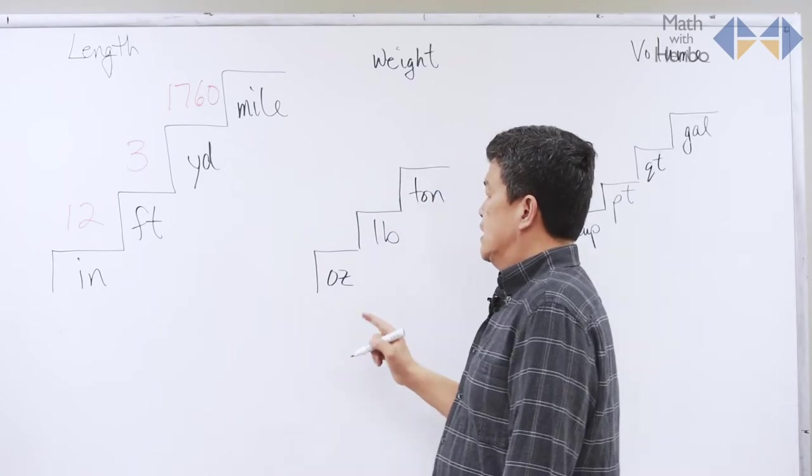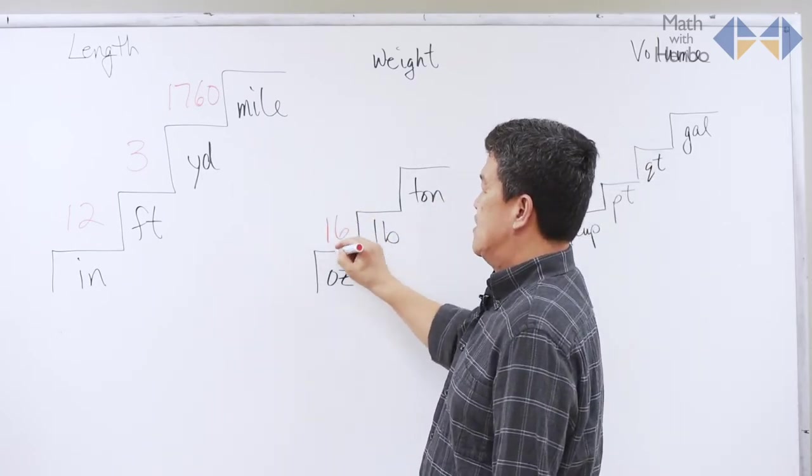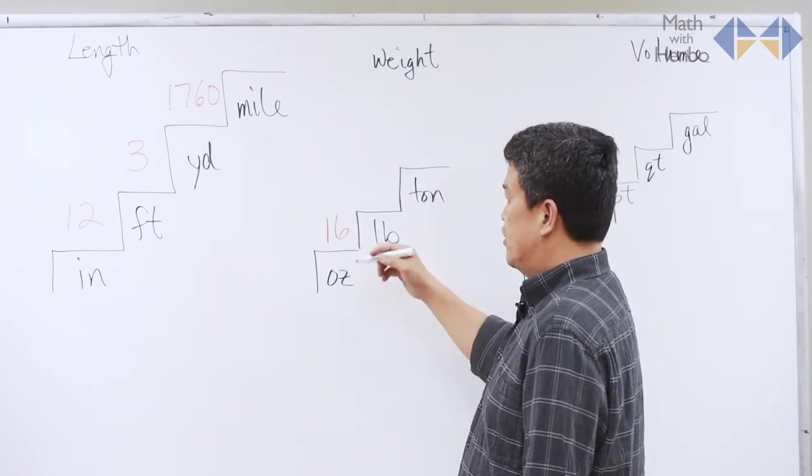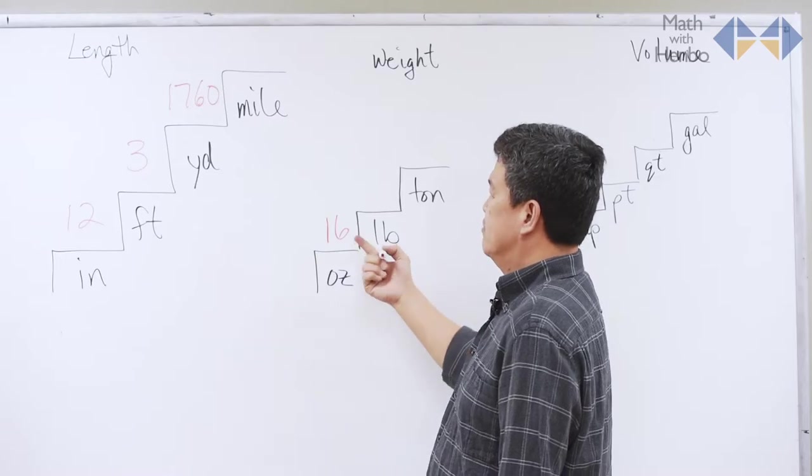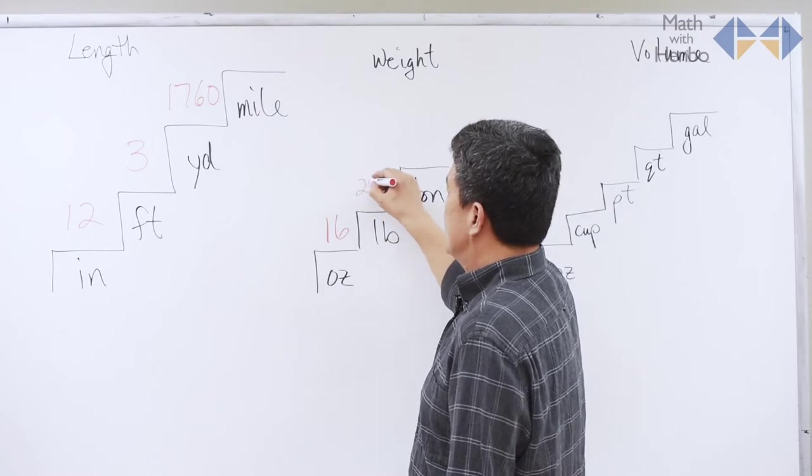For the weight, ounces to pounds takes 16 ounces. So, LB looks like 16. I hope that triggers you to remember that LB, ounces, 16 ounces. As for pound to ton, there are 2,000.